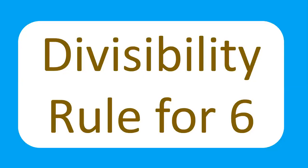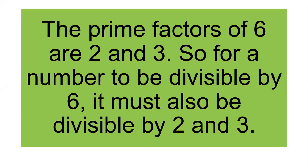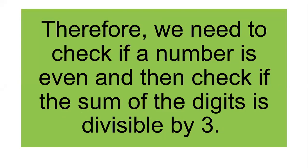Another rule: divisibility rule for 6. The prime factors of 6 are 2 and 3. So for a number to be divisible by 6, it must also be divisible by both 2 and 3. We need to check if the last digit is even, and then check if the sum of the digits is divisible by 3. It must satisfy both conditions.